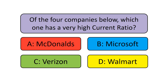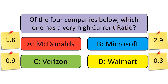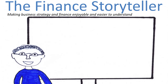In summary, of the four companies, the current ratios are: Microsoft 2.9, McDonald's 1.8, Verizon 0.9, and Walmart 0.8. The highest for 2017–2018 is Microsoft. Each company has a different composition of current assets and current liabilities, and its own story behind the numbers. I hope this explanation of the current ratio was useful. If you enjoyed this video, please give it a like, watch related videos on the end screen, and subscribe to the Finest Storyteller YouTube channel. Thank you!